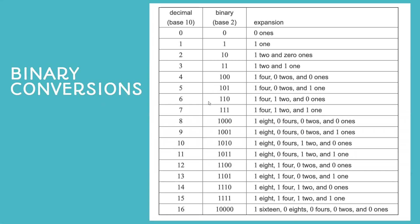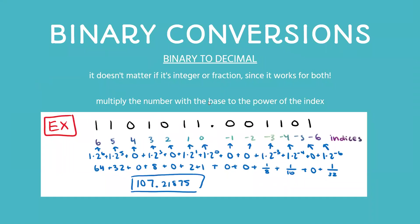Here's a chart that shows conversions from base 10, the decimal number system, to the binary number system. Try to pick any number and see if you can convert to binary yourself. Now we'll do an example to help you gain a better understanding. From binary to decimal, it doesn't matter whether the number is an integer or a fraction — the way you do it is the same. You basically multiply the number with the base to the corresponding index power.